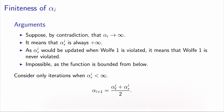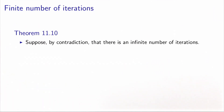From now on, we consider only iterations associated with a finite value for αR. At each of these iterations, the new value of α will be the midpoint of αL and αR, which means the interval [αL, αR] will decrease by a factor of two at each iteration. The second result we want to show is that this algorithm will terminate after a finite number of iterations — this is Theorem 11.10 in the book. Suppose by contradiction that there is an infinite number of iterations. Because we decrease the interval length by two at each iteration, the length of the interval will converge to zero.